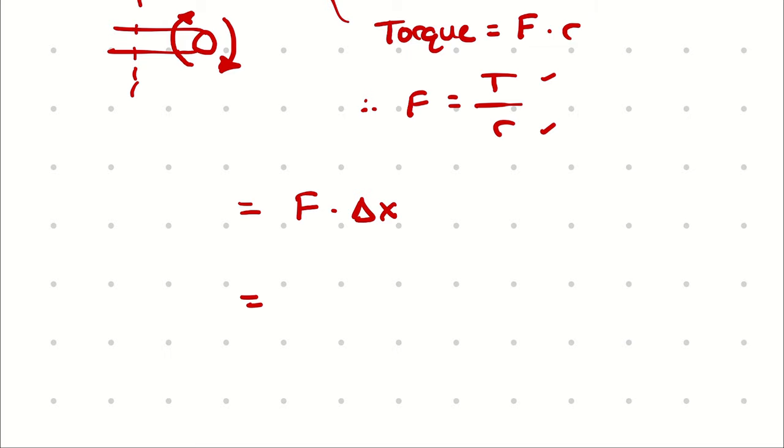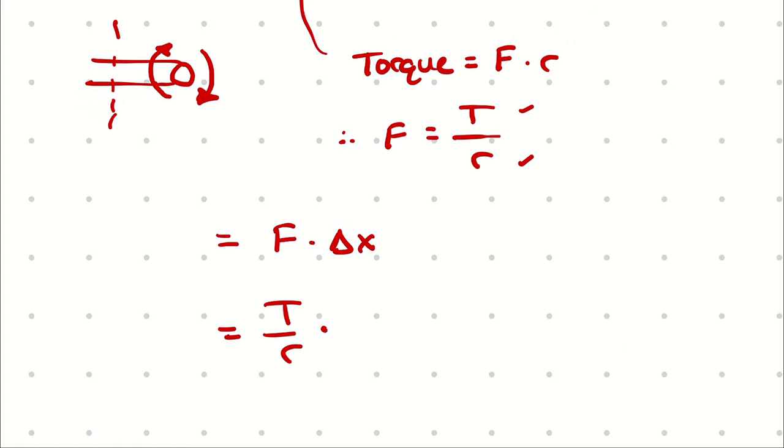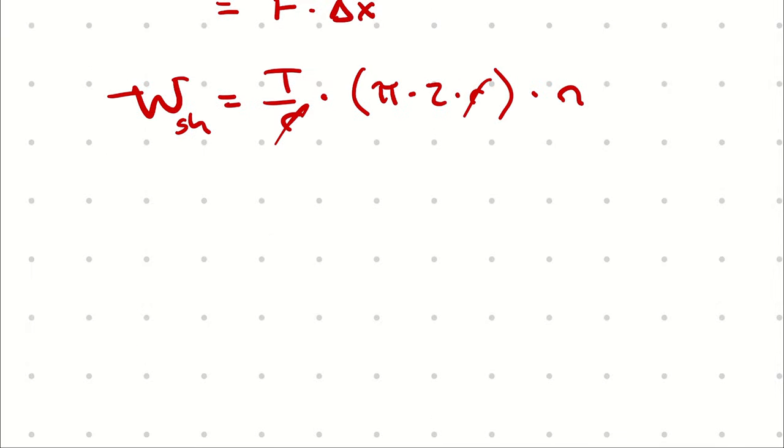And I could substitute in torque over radius for force. And instead of displacement, I could describe the perimeter of that shaft, which I will describe as pi times the diameter. But instead of diameter, I want radius. So pi times 2 times radius. That's the perimeter. And then I will call number of revolutions n. Now, my shaft work simplifies, because the radius cancels, to 2 times pi times torque times number of revolutions completed.